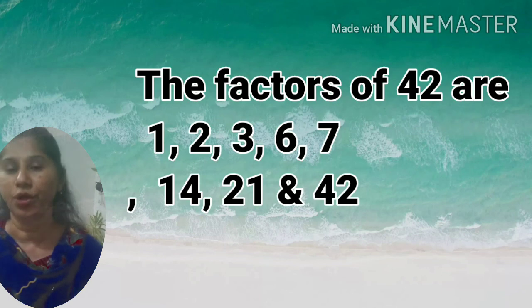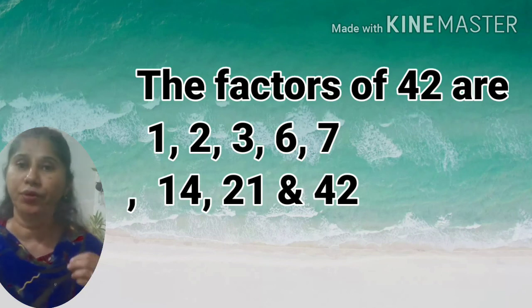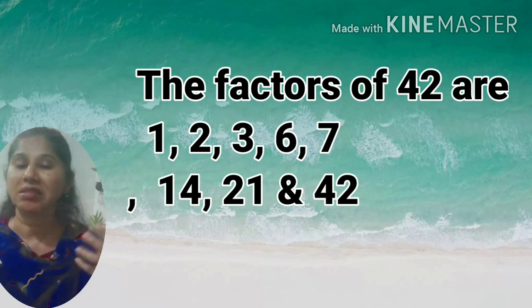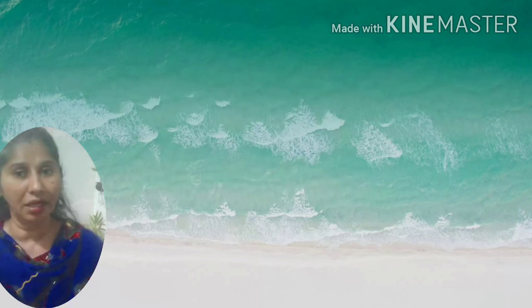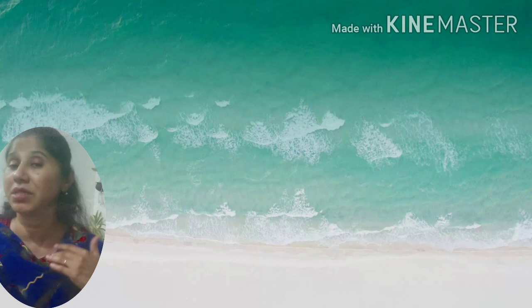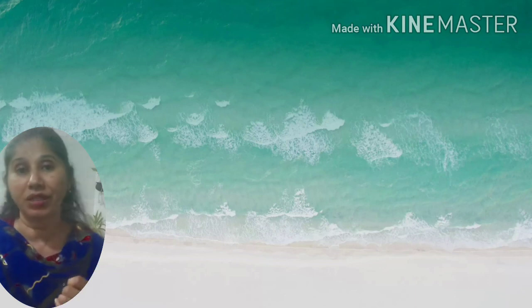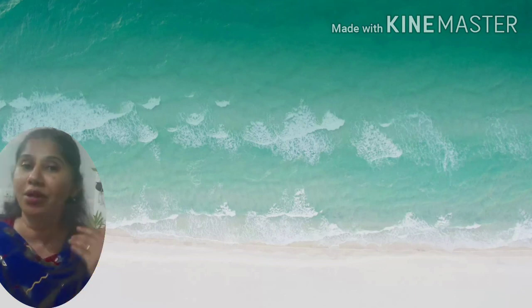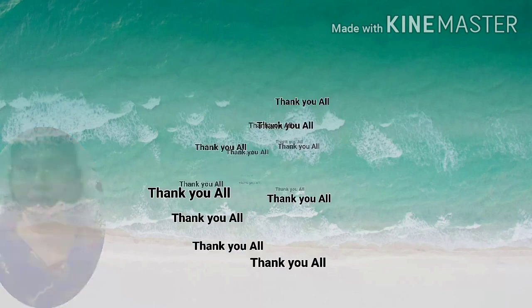Listing all the factors of 42: 1, 2, 3, 6, 7, 14, 21, and 42. This listing method helps you find all factors clearly, and it becomes much easier when you know your multiplication tables well. That's why it's always important to learn your tables thoroughly. Thank you.